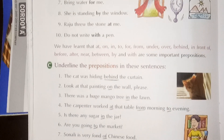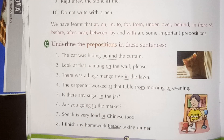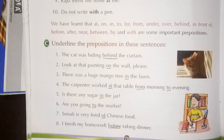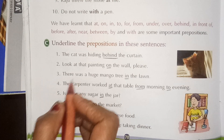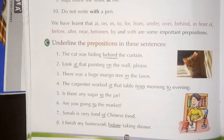Now we come to the exercise part — underline the prepositions in these sentences. The cat was hiding behind the curtain — behind means peeche, behind is the preposition. Look at that painting on the wall — here there are two prepositions: at and on.